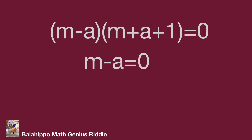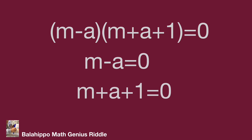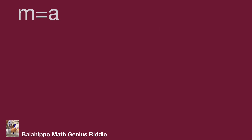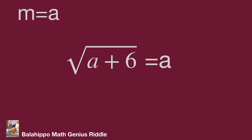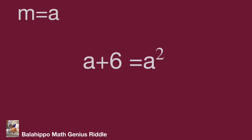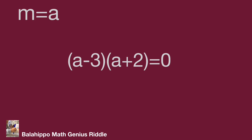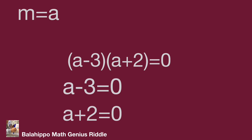So, m plus a equals 0 or m plus a plus 1 equals 0, meaning m equals negative a, or m equals negative a minus 1. For Case 1, when m equals negative a: since m equals the square root of a plus 6, we get the square root of a plus 6 equals negative a. Squaring both sides and rearranging gives a squared minus a minus 6 equals 0. Factorizing: quantity a minus 3 times quantity a plus 2 equals 0, so a equals 3 or a equals negative 2.